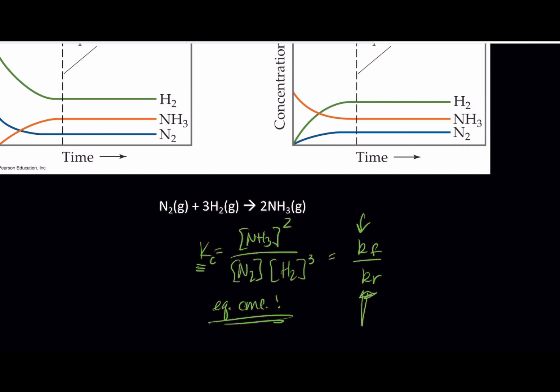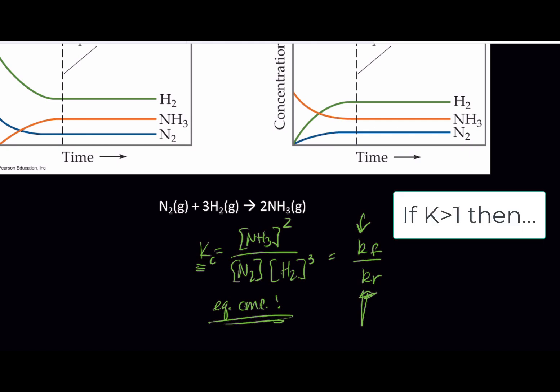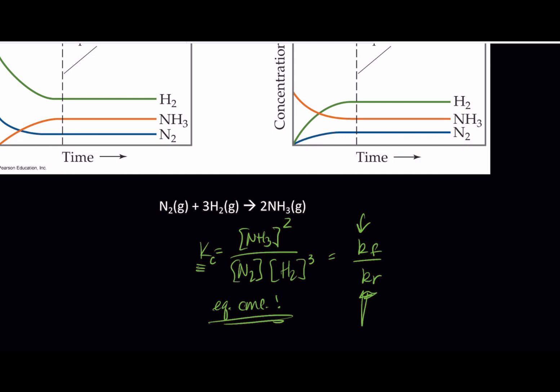If we have a K that is large — large being greater than 1 — that means the rate constant for the forward reaction must be bigger than the rate constant for the reverse reaction. If the equilibrium constant K is greater than 1, then the rate constant for the forward must be greater than the rate constant for the reverse. The rate constant tells us something about the tendency of the reaction to go forward, and if the rate constant for the forward process is bigger, it means it tends to make more product, giving us a larger value of equilibrium constant K.